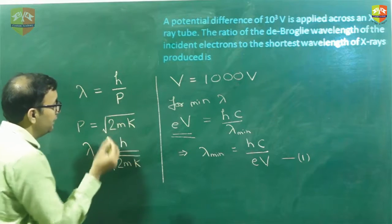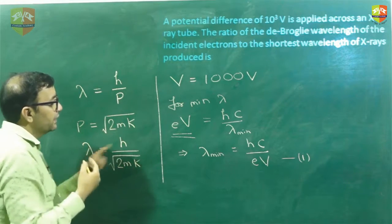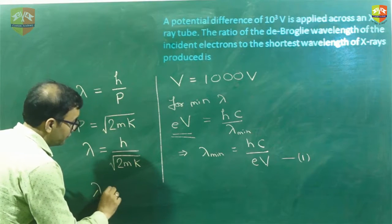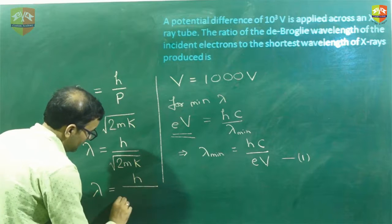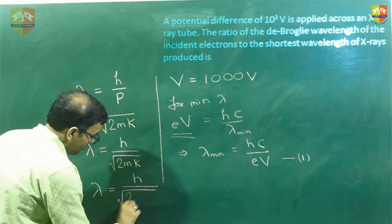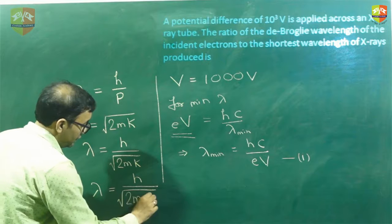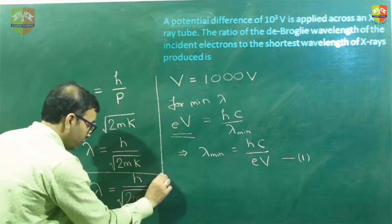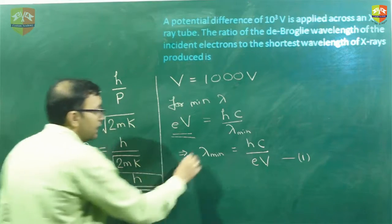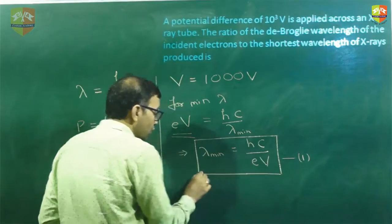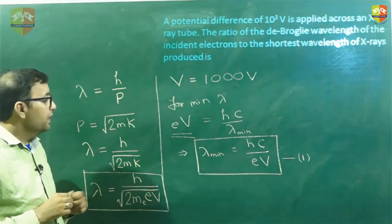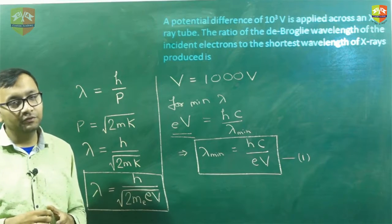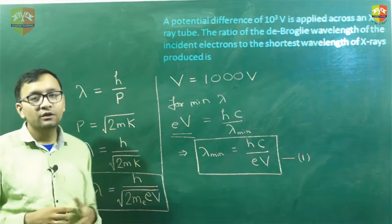And what is K? K is e times v. So the de Broglie wavelength becomes h divided by the square root of 2 times mass of electron times charge of electron times v. This is the de Broglie wavelength, and the minimum wavelength of the photon is hc over ev. The ratio of these two is what is asked, so now you can solve this on your own. This is how you solve this particular question.